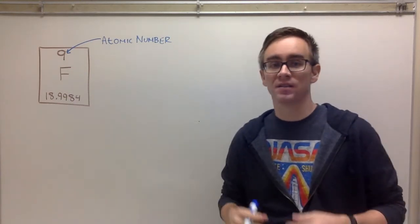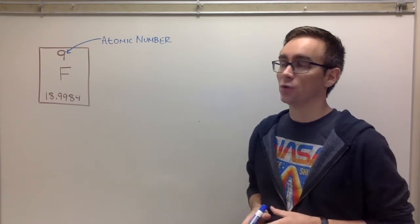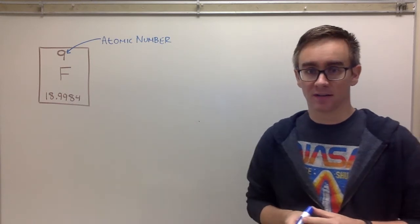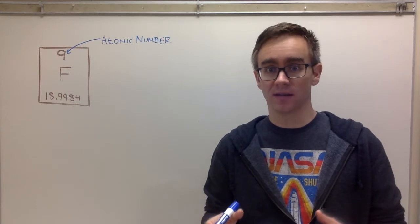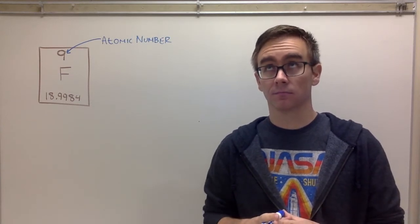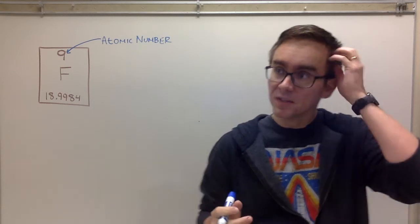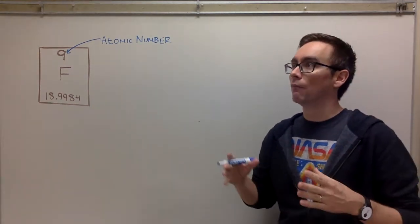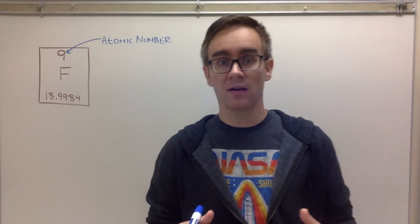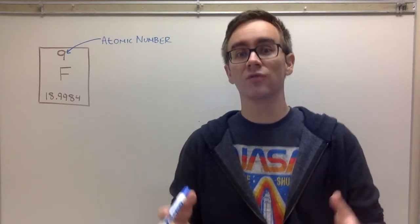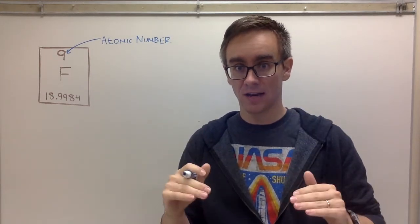The atomic number is extremely important. If you look at your periodic table, you'll notice there's a pattern: the atomic number increases as it goes left to right and then as you go down. It goes 1, 2, then 3, 4, 5, 6, 7, 8, 9, 10, 11, 12, 13, 14, and keeps increasing.